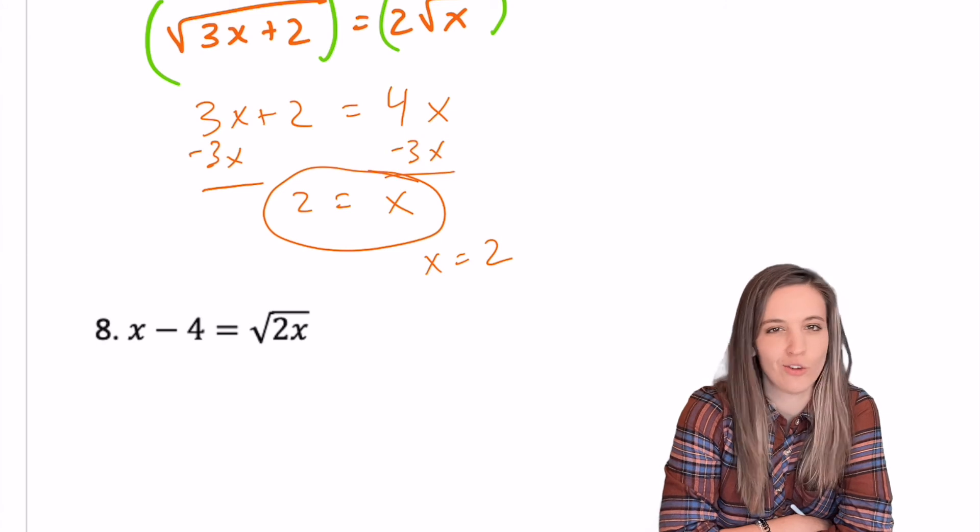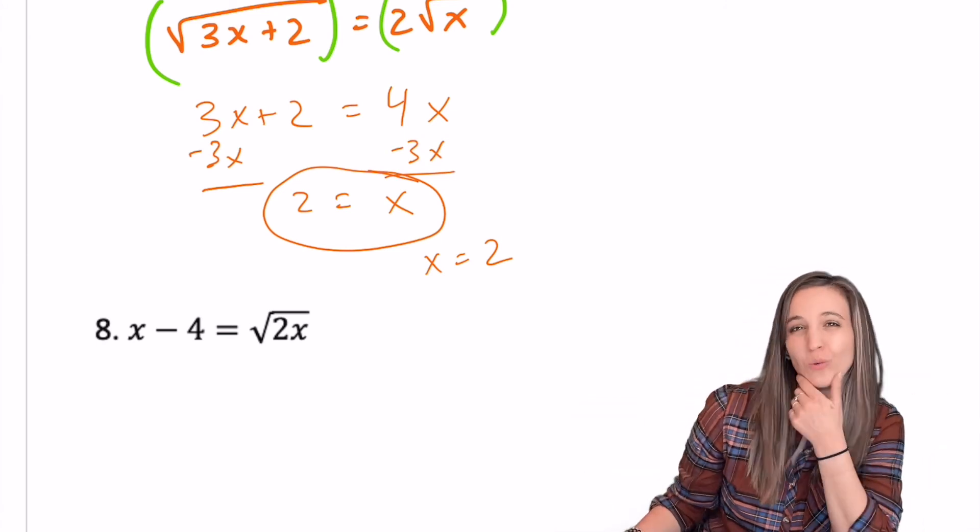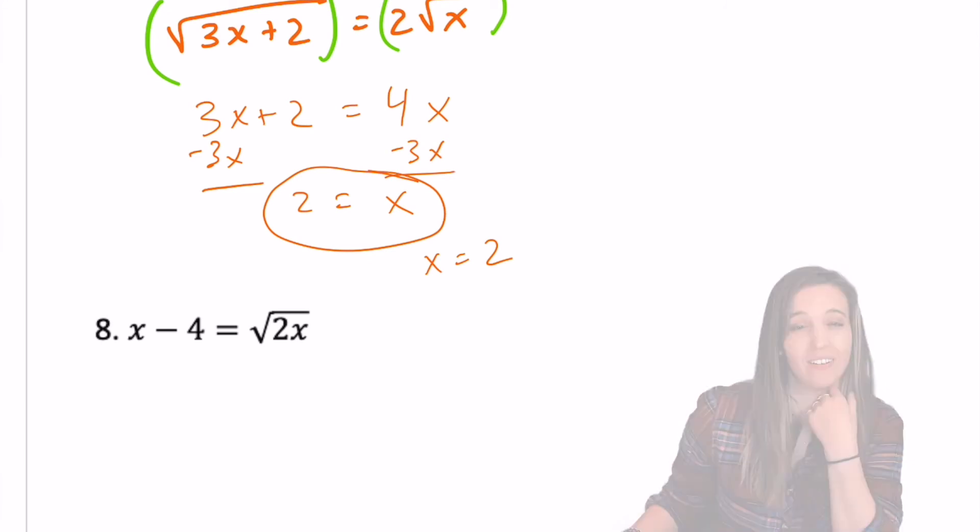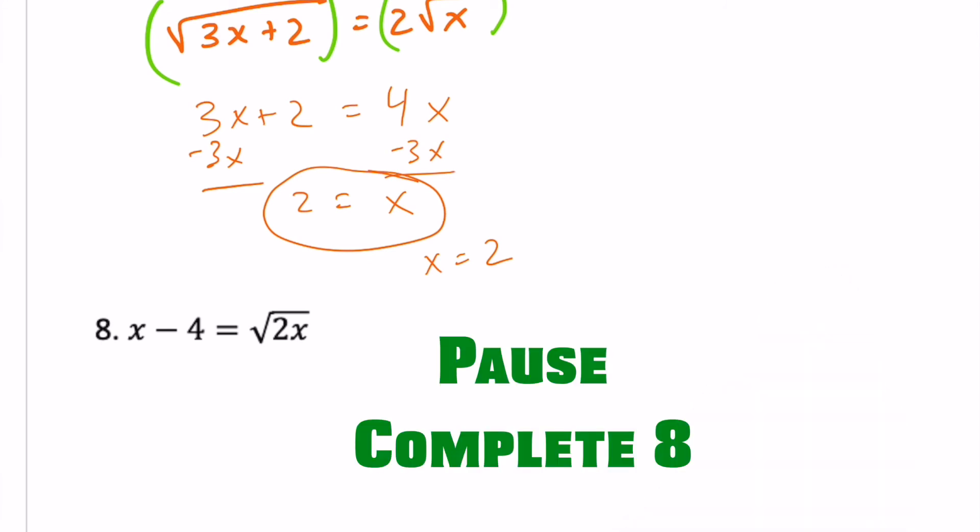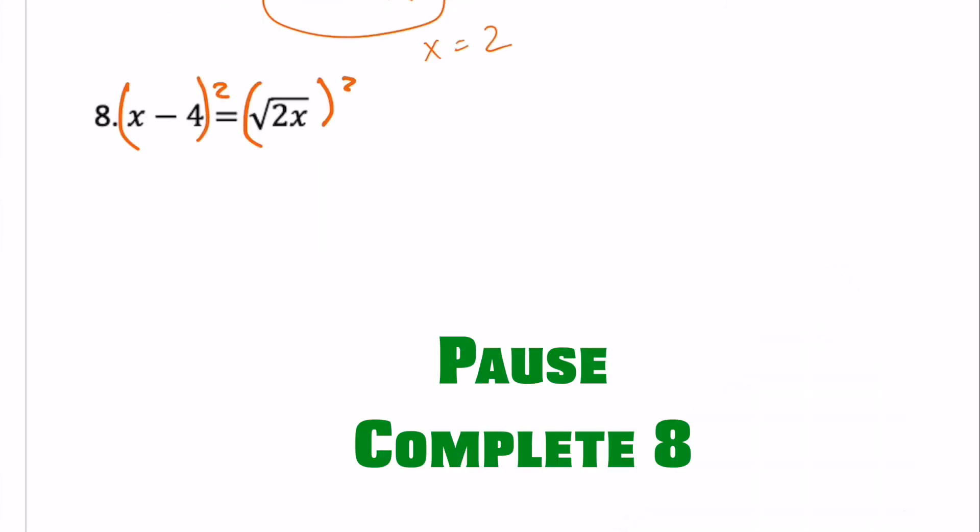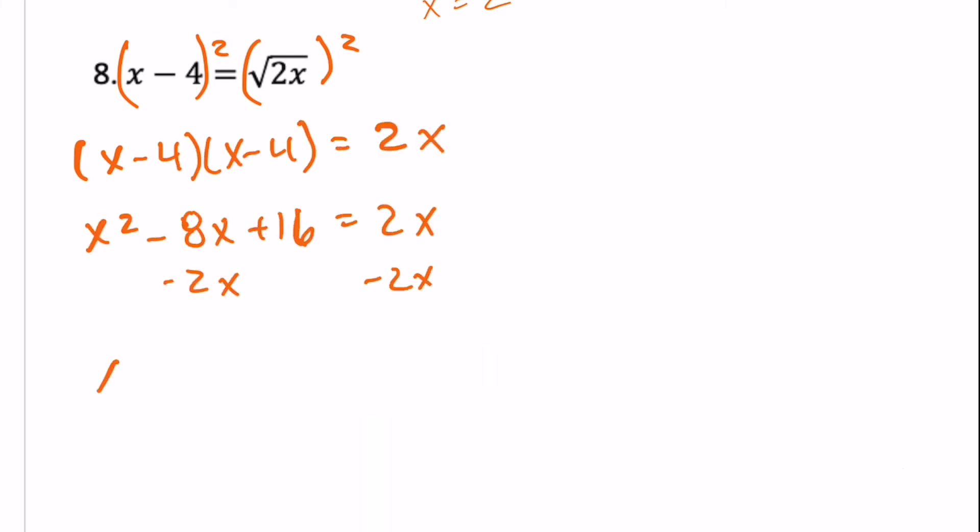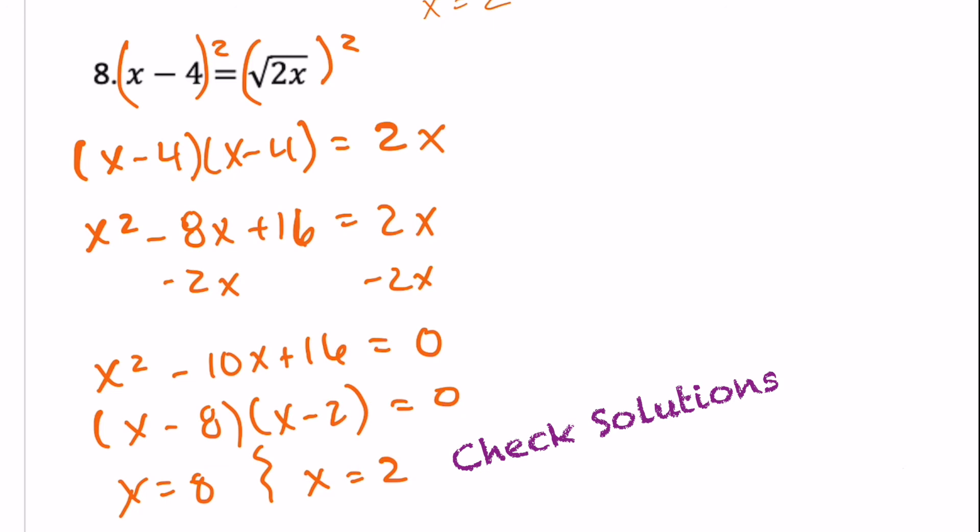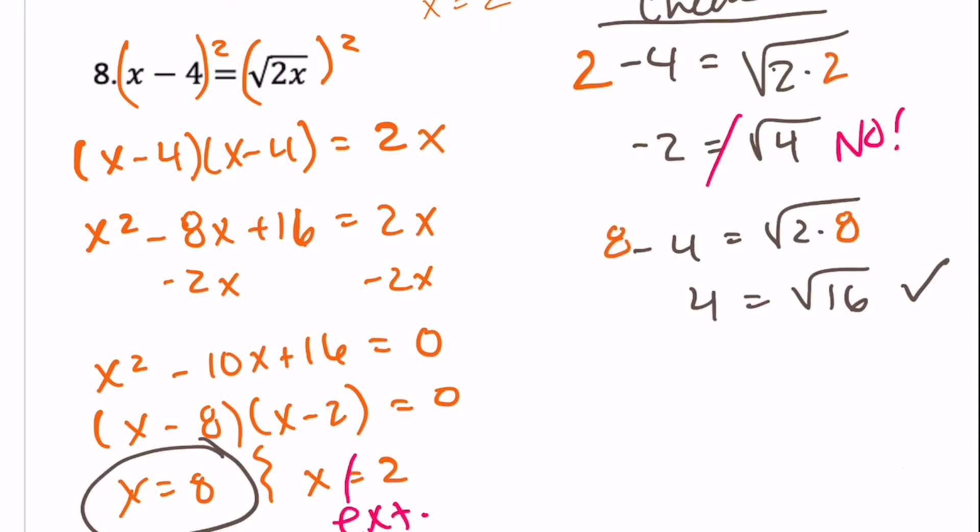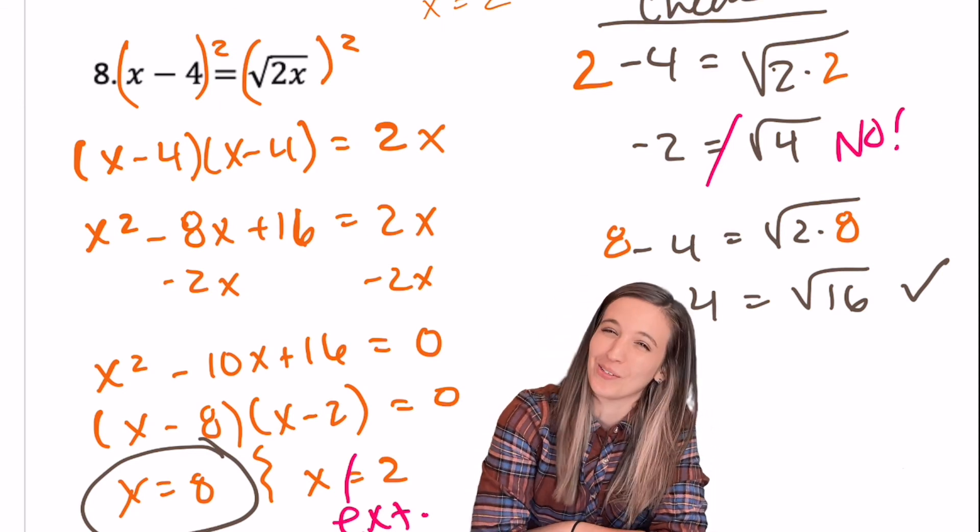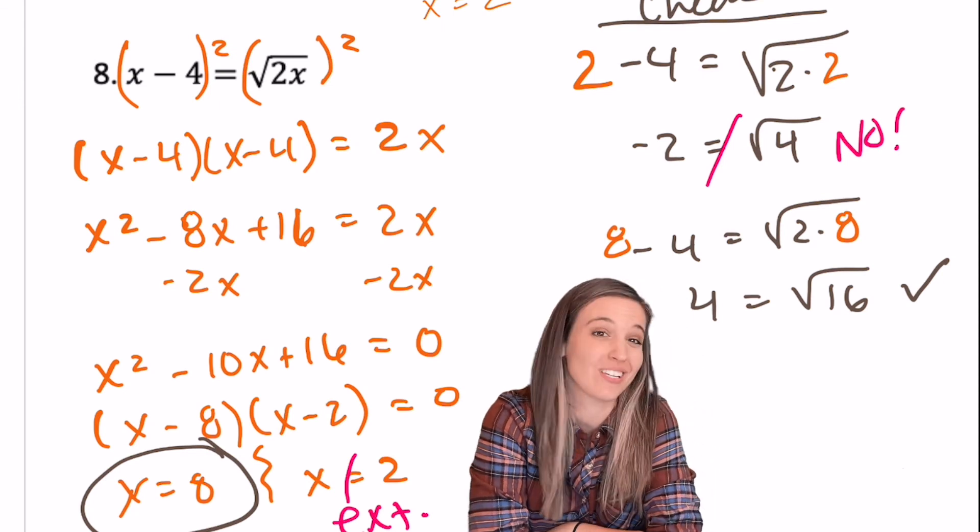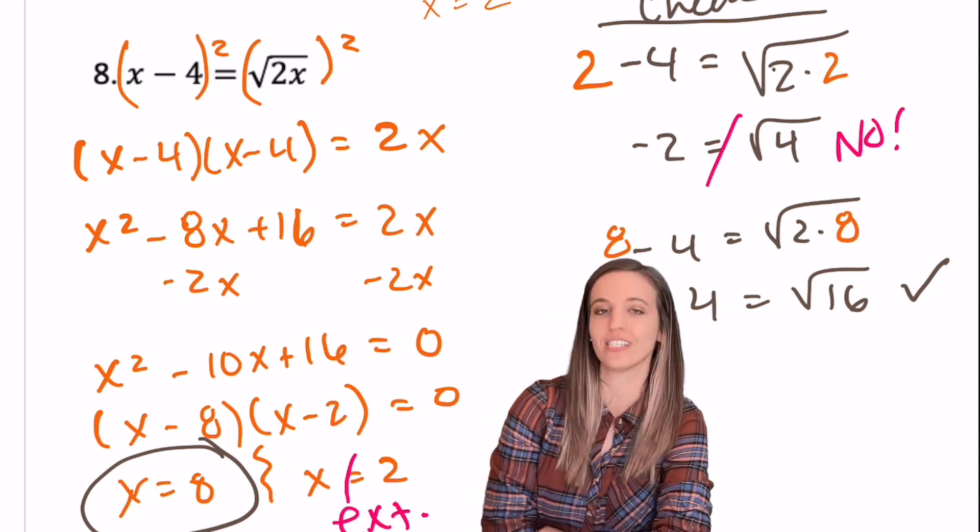All right, this last one, I totally think you got this. I have x minus four equals square root of two x already isolated. Go for it. Check it out. I got x equals eight x equals two. When I checked my solution, x equals two was extraneous. So just x equals eight.